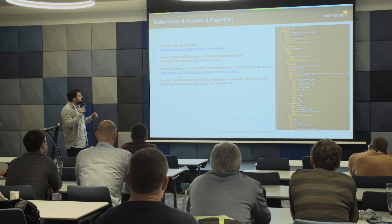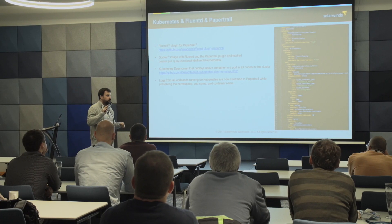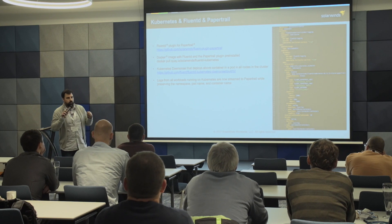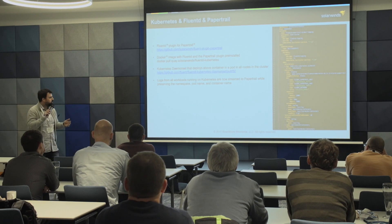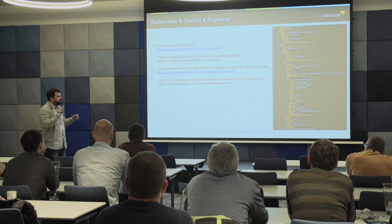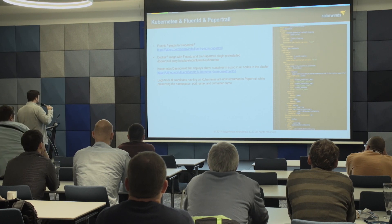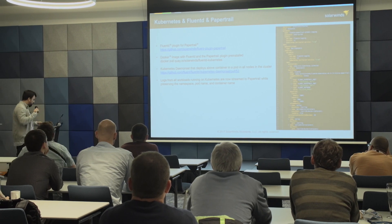We have a FluentD plugin for Papertrail that allows you to install FluentD on each host in a Kubernetes cluster. You point it with a Papertrail host and port, and fire off to the cluster. It gets automatically deployed to all instances of the cluster and then magically all of the containers are logging into Papertrail — and it would take you three seconds.